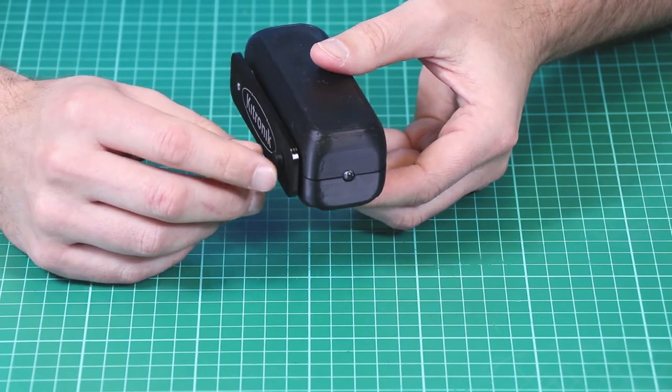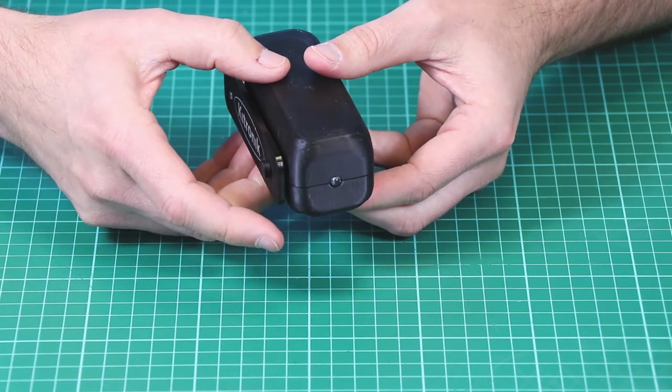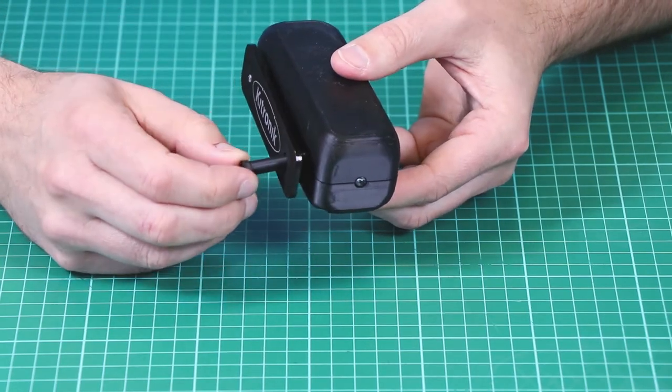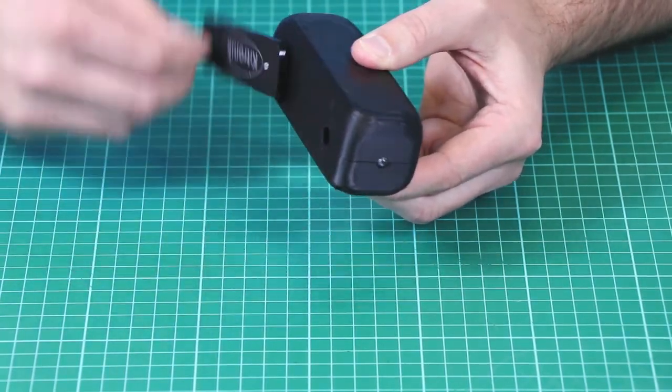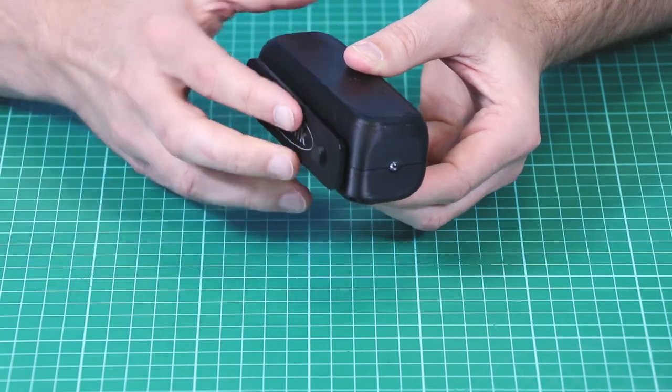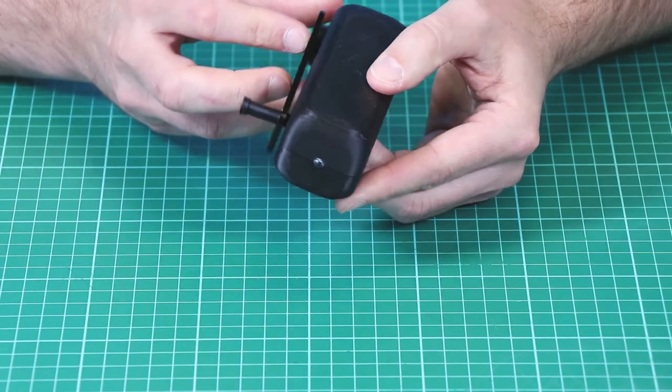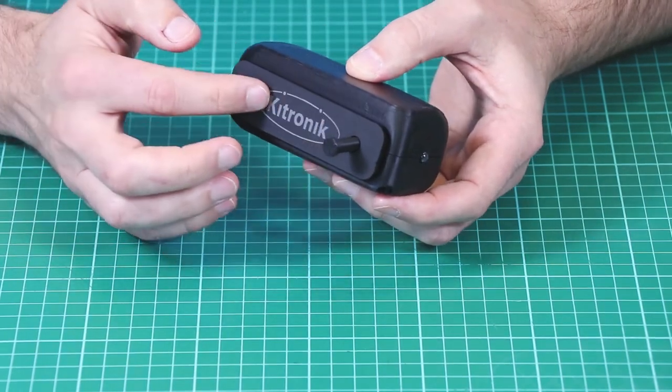For people who want to take things a little bit further, you could create something like this 3D printed case. Here we have a handle that tucks away and pulls out. This can be used to wind the motor and be tucked away again afterwards. The whole thing is 3D printed and this part here is laser-cut.